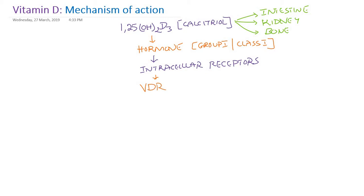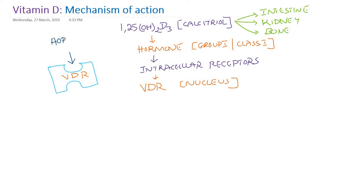The vitamin D receptor is a nuclear protein present in the nucleus. It has two domains. One domain is called the hormone binding domain, or ligand binding domain — calcitriol will bind to this domain. The other domain is called the DNA binding domain.